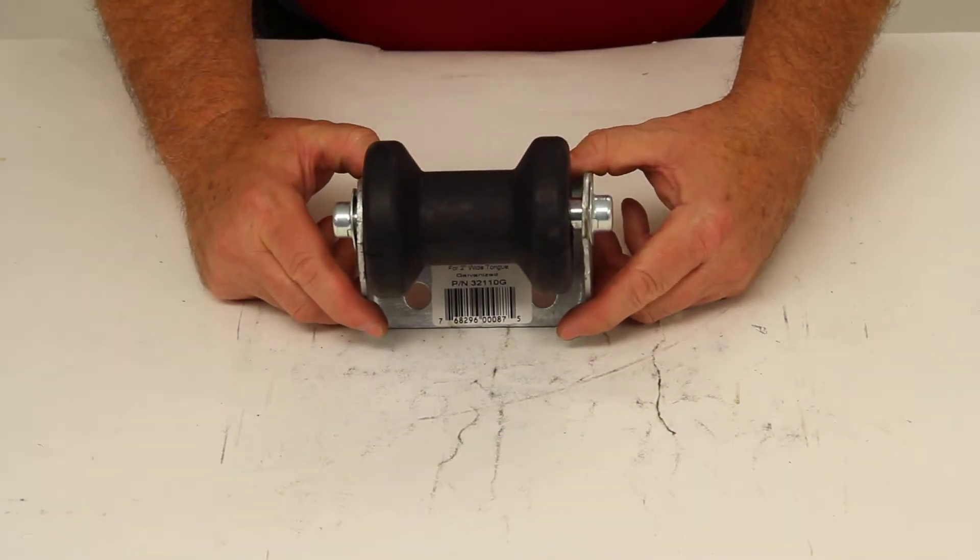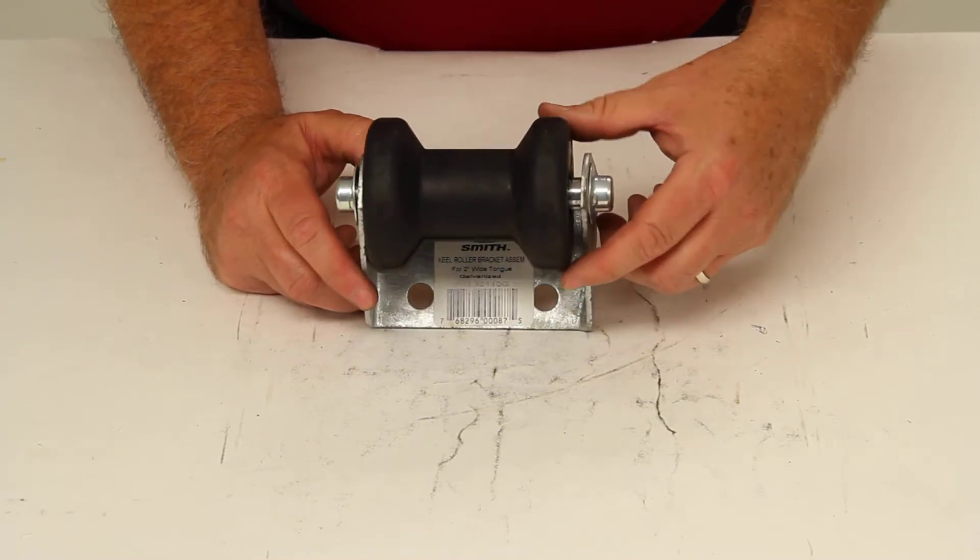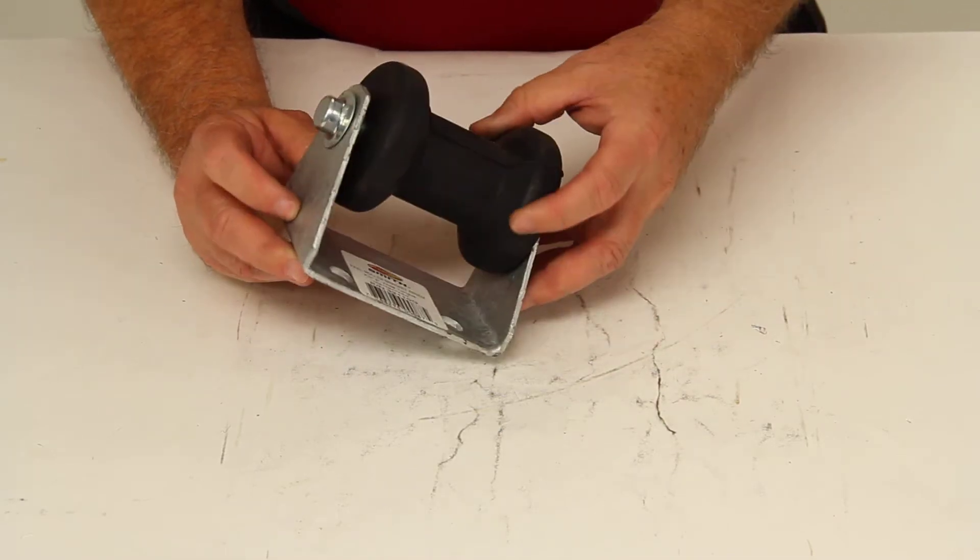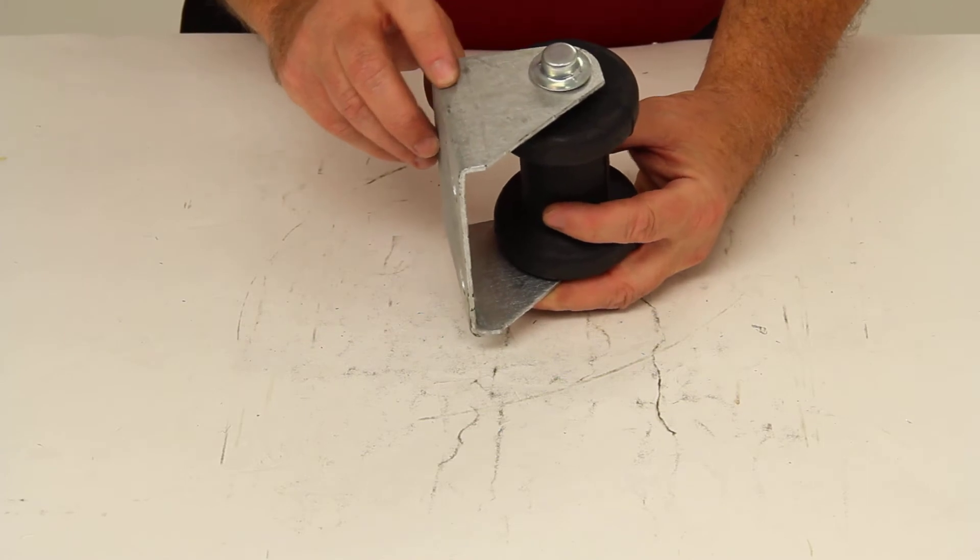This assembly is typically installed flat on the tongue of a boat trailer, and this spool roller bracket assembly will help stabilize the keel of the boat during trailing.